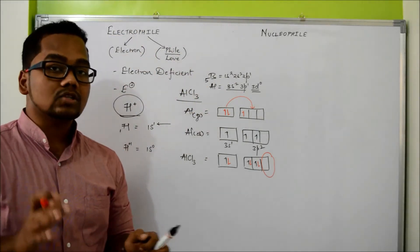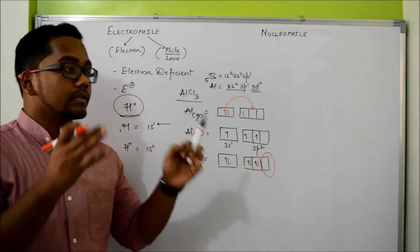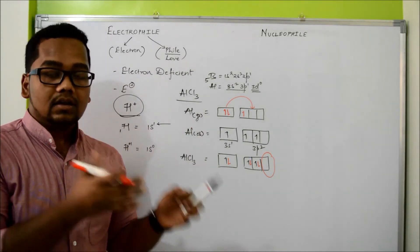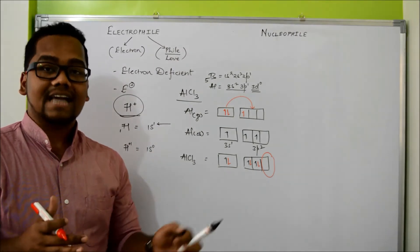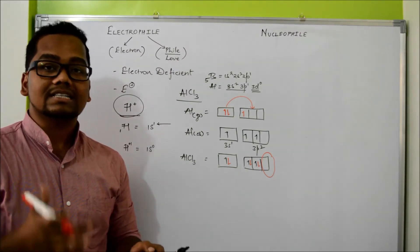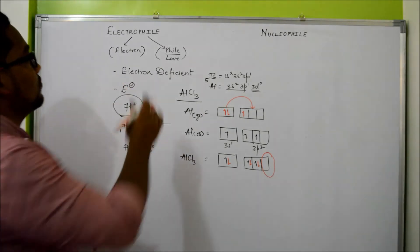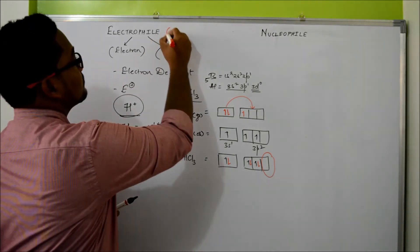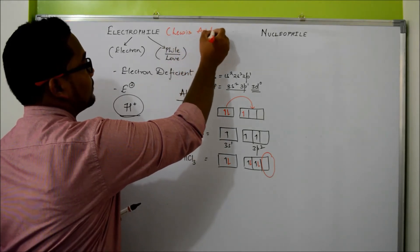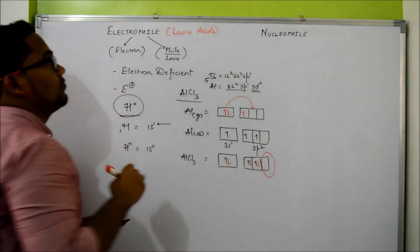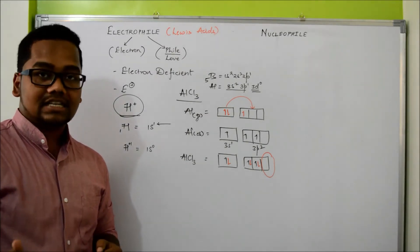If you know Lewis acid-base chemistry, according to it a molecule or ion that is an electron pair acceptor is called a Lewis acid, and if it is an electron pair donor, it is a Lewis base. If you apply the same concept to the Electrophile, your Electrophile becomes a Lewis acid as it is an electron pair acceptor. So your Electrophile behaves as a Lewis acid.